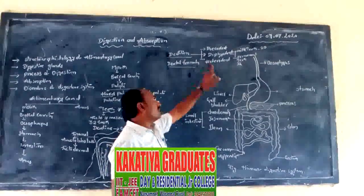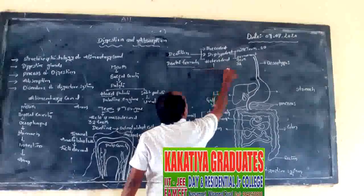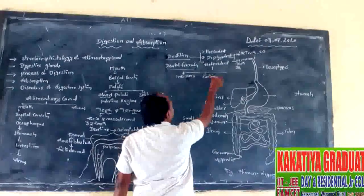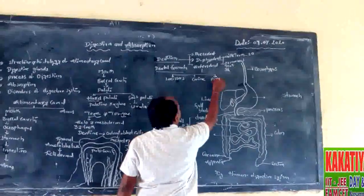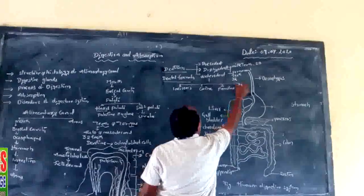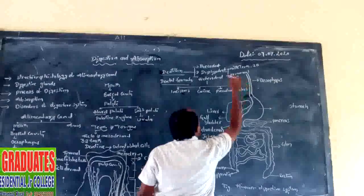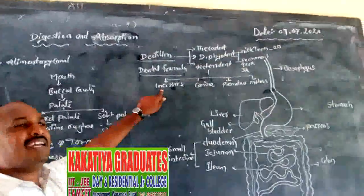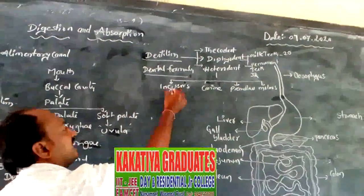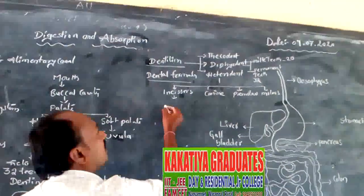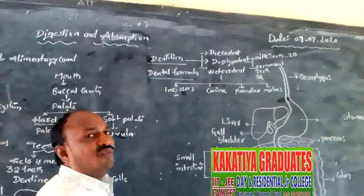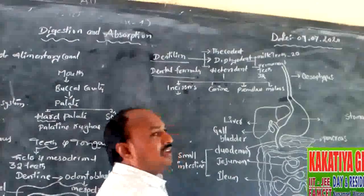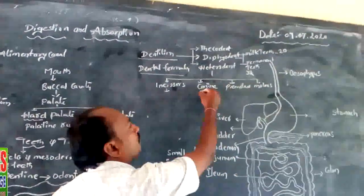The four types of teeth are: incisors, canines, premolars, and molars. Incisors have sharpened edges and are called chisel teeth, which cut food particles very well. Canines are pointed structures which tear food particles.